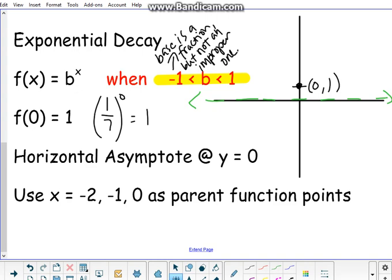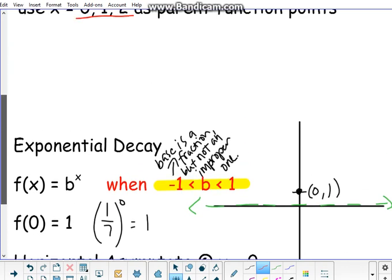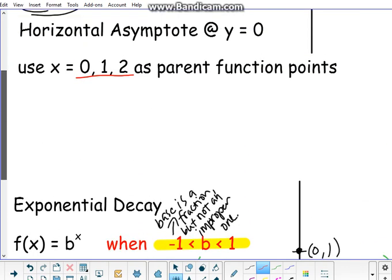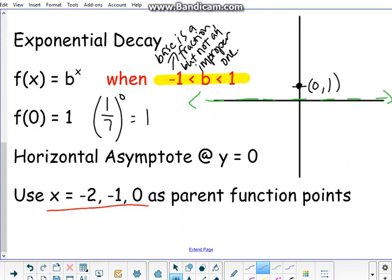But how do decay functions change? How are they different? This is the big idea here. We always want to be able to identify whether it's growth or decay because this is going to tell us what's going to be the easiest way to graph. And that is going to be by choosing the right values for x to plug in and find for y for our parent function. So, here, what the big difference is for growth, we used 0, 1, and 2 for our parent function points for x. Here, we're going to use negative 2, negative 1, and 0.